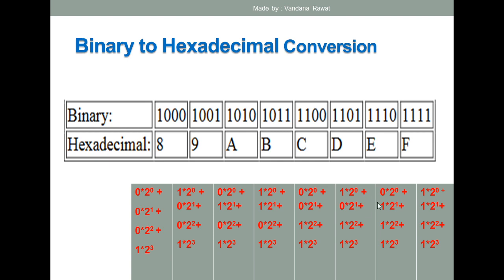For example, if you have to convert the hexadecimal number 9D to binary: for 9, you write 1001 directly. For D, since D equals 13 in decimal, and 13 in binary is 1101, the binary representation of 9D hexadecimal is 1001 1101.